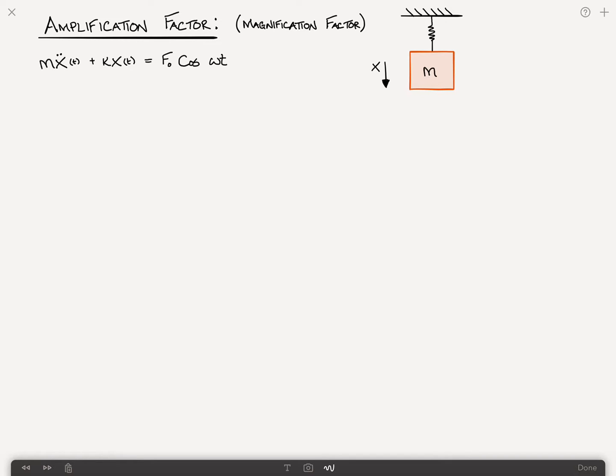The idea is that we've got a mass spring system and it's being forced by a harmonic forcing function that we'll call f sub zero cosine omega t. And what we're trying to understand is the ratio or the amplification between the static deflection and the dynamic deflection, the maximum dynamic displacement.